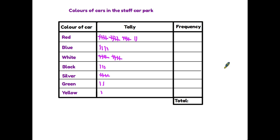The good news is we do not need to draw a new table to create a frequency table. As you can see here, we have exactly the same table that we just completed the tally chart on, but all we have done is added an extra column on the end. The title is frequency, because a frequency table is simply a tally chart that has been added up. All we need to do is go back and count the number of each color.